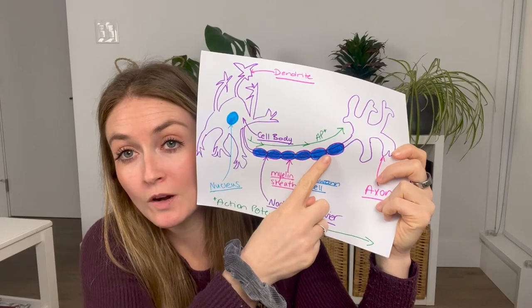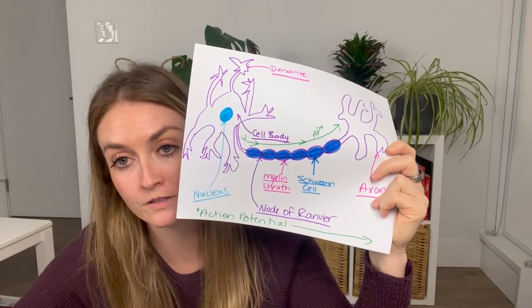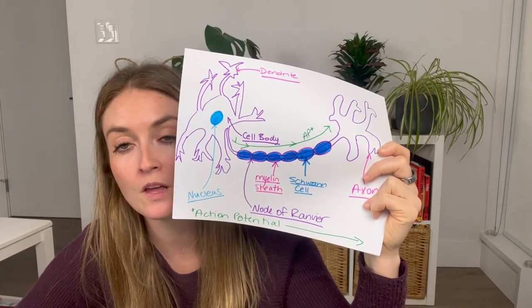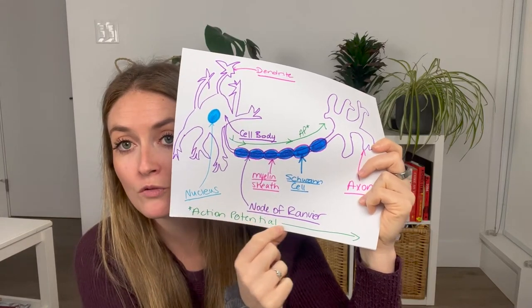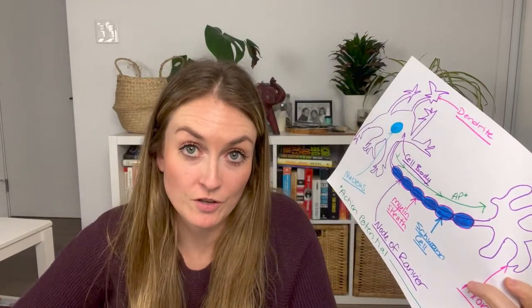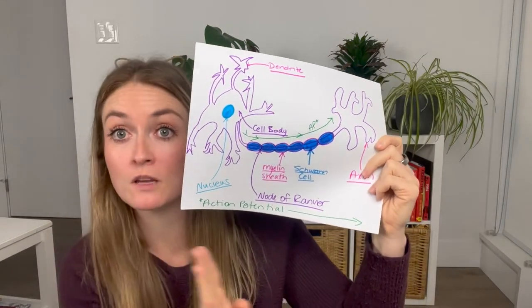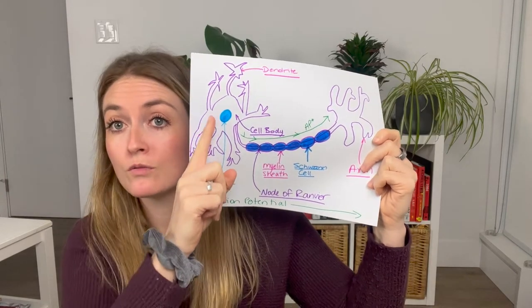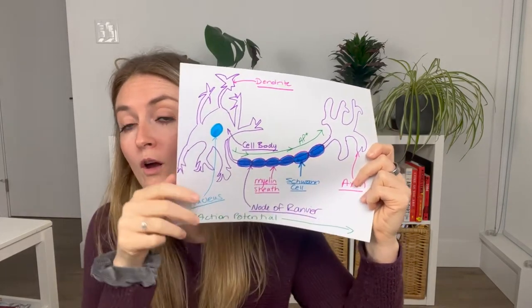Between each Schwann cell, we have what's called a node of Ranvier — just a technical term we won't get into the function of here. As you can see at the bottom, I have "action potential" written with an arrow heading towards the axon. The action potential — the message being communicated along the nerve — travels from the dendrite through the cell body, through the length of the nerve, all the way to the axon, which is the other end that delivers the message onward. So the dendrite is the receiving end and the axon is what passes that information along to wherever its final destination is.